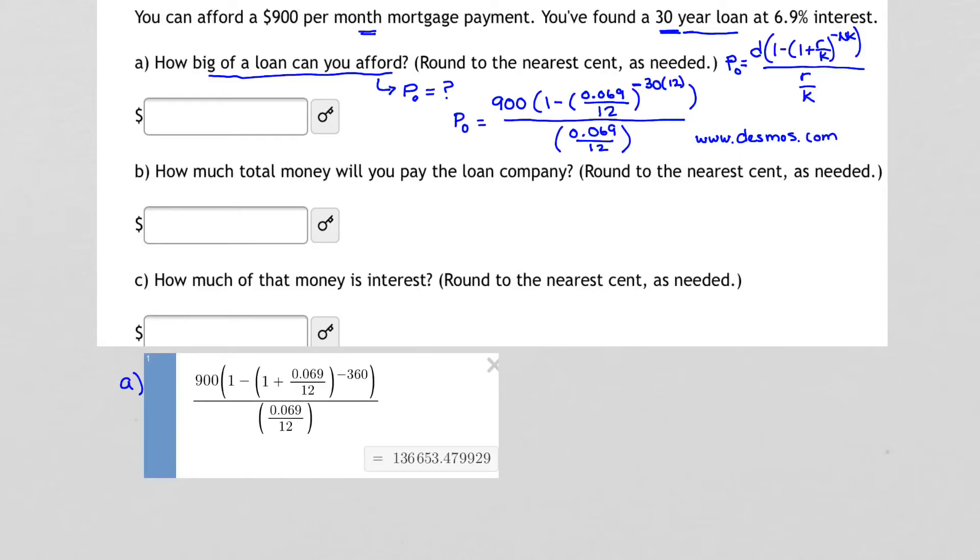Calculating it on Desmos, I have 900 times the quantity 1 minus 1 plus 0.069 over 12, raised to the negative 360, all divided by 0.069 over 12. The answer I get then for P sub 0 is $136,653.48. So that's my answer to question A. P sub 0 is $136,653.48.